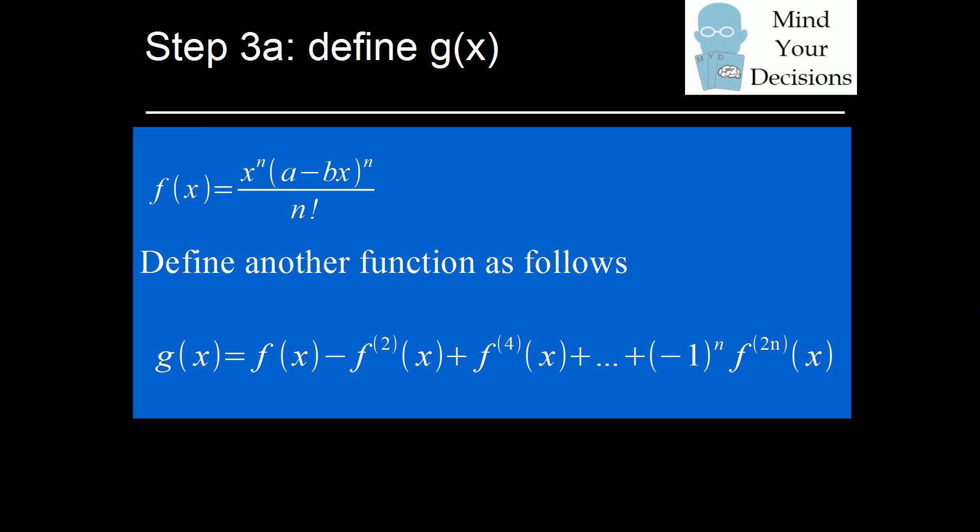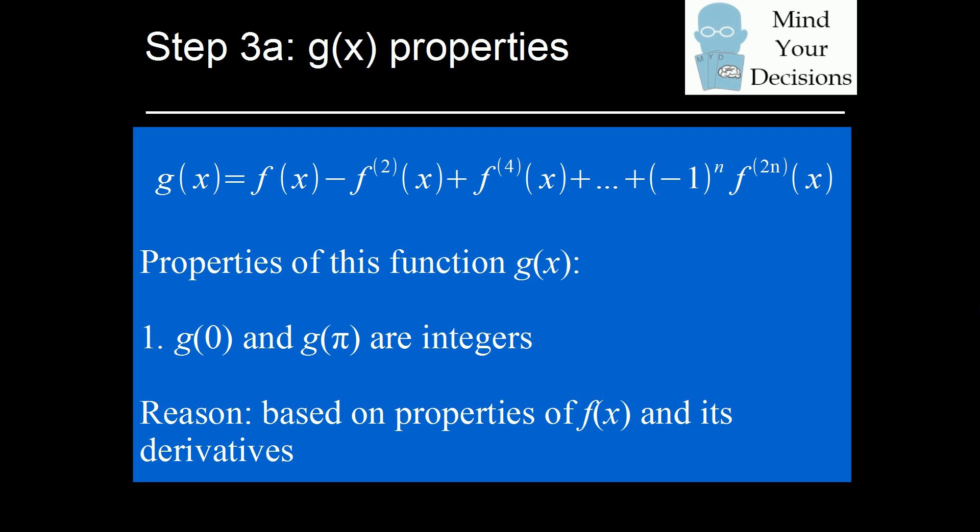Now we have some useful properties of g of x. The first property is that g of zero and g of pi are going to be integers. Why is that? We just showed that f evaluated at zero and all of its derivatives were integers, and f evaluated at pi and all of its derivatives evaluated at pi are also integers. So putting those two facts together, g of zero and g of pi — which are sums of those values — are also integers.